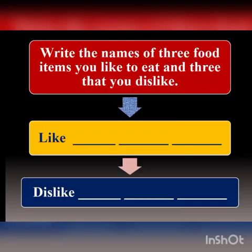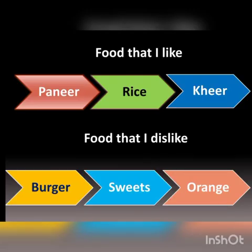Now students, think and write. Here is an activity for you — write the names of three food items you like to eat and three that you dislike. I like eating paneer, rice, and kheer, and I don't like to eat burger, sweets, or orange. You can fill up these blanks according to the food you like or dislike.